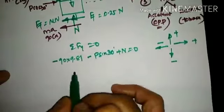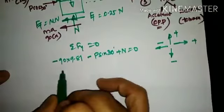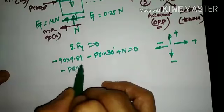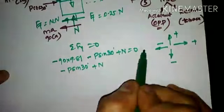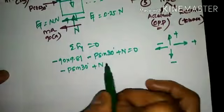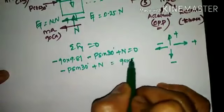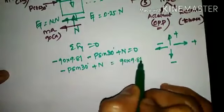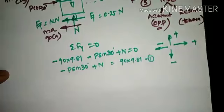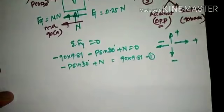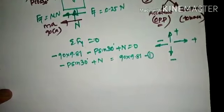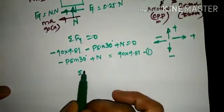Reframing this equation: N − P sin 30° = 90 × 9.81. This is Equation 1. Since both P and N are unknown, we keep this equation as is and proceed to the second equation.